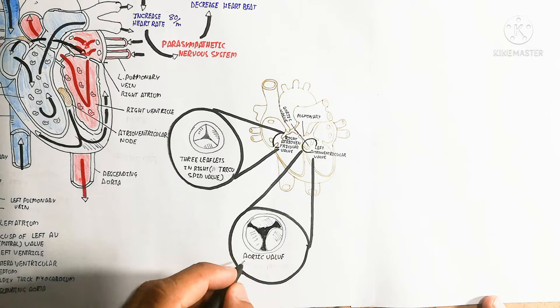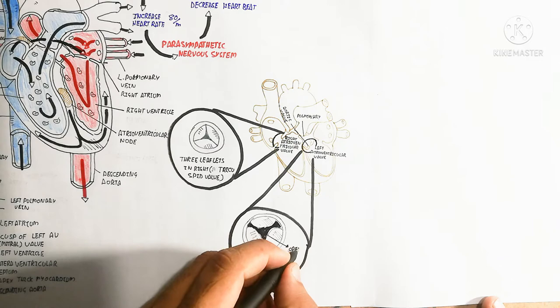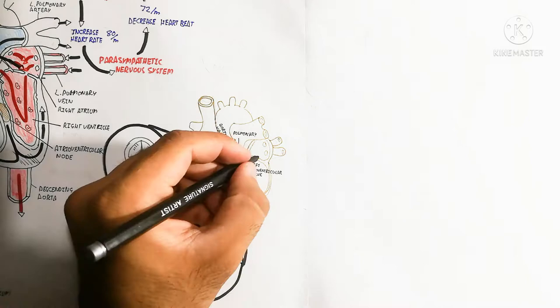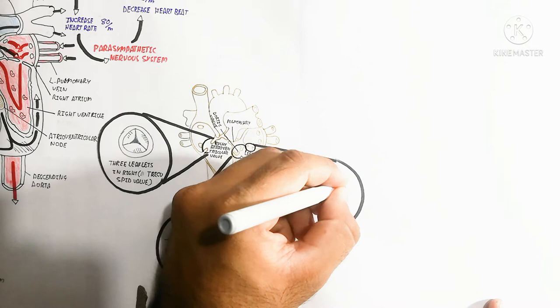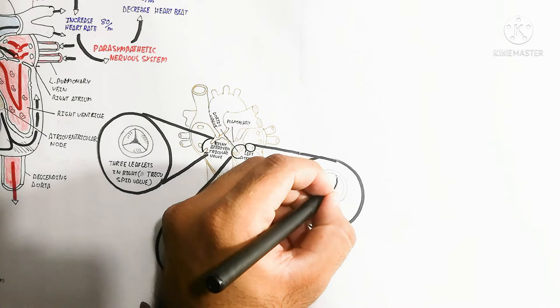Veins also contain valves to prevent backward movement of blood. The left bicuspid valve, also known as the mitral or left atrioventricular valve, contains two cusps or two leaflets.